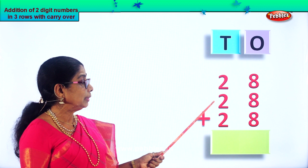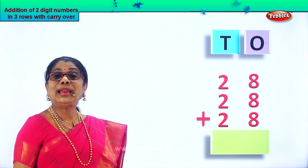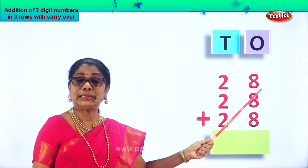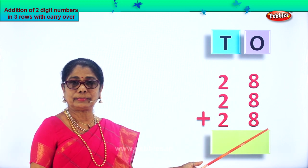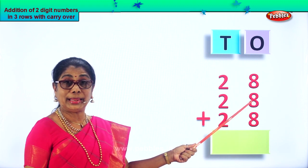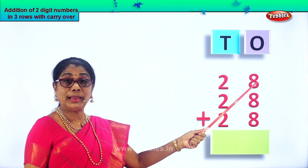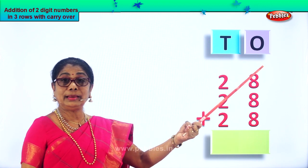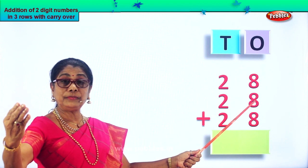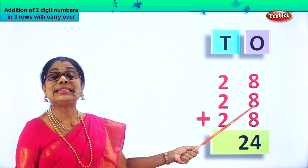What is twenty-eight plus twenty-eight plus twenty-eight? We'll add the ones first. In the ones place we have eight plus eight plus eight. Eight in the mind and eight on your fingers: nine, ten, eleven, twelve, thirteen, fourteen, fifteen, sixteen. Eight plus eight is sixteen.